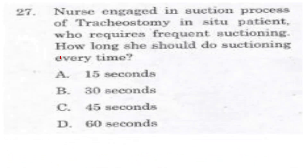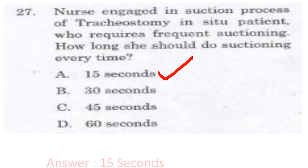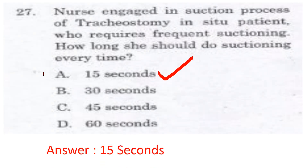Question 27: The nurse is engaged in suctioning a tracheostomy in-situ patient. If a nurse is suctioning a tracheostomy patient who requires frequent suctioning, the suction pressure is 80 to 120 mmHg. Normally, suctioning time is 5 to 10 seconds, but maximum suction time should only be 15 seconds. The answer is 15 seconds — remember this.